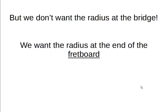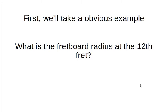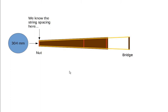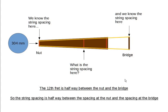We don't want the radius at the bridge — we want the radius at the end of the fretboard. So we need to find the string spacing at the end of the fretboard. For an obvious example: what's the fretboard radius at the 12th fret? Here is a neck with frets at positions 12, 24, and a bridge. We know the string spacing at the nut and at the bridge. The 12th fret is halfway between the nut and the bridge, so the string spacing is halfway between the spacing at the nut and the spacing at the bridge.